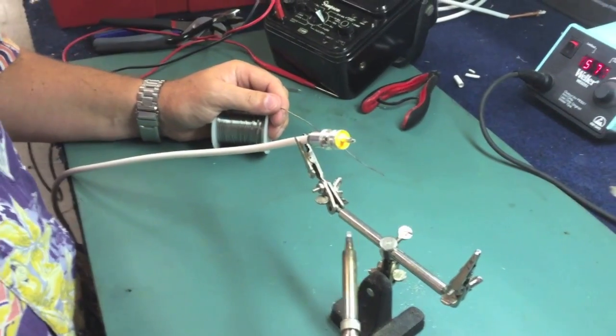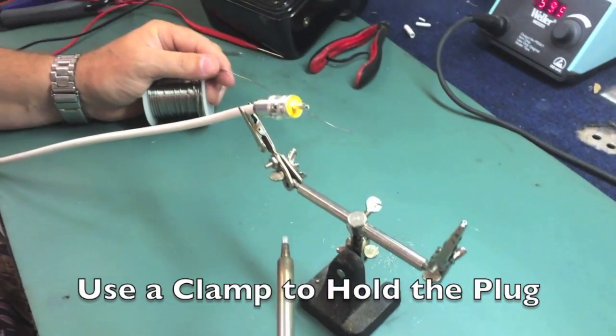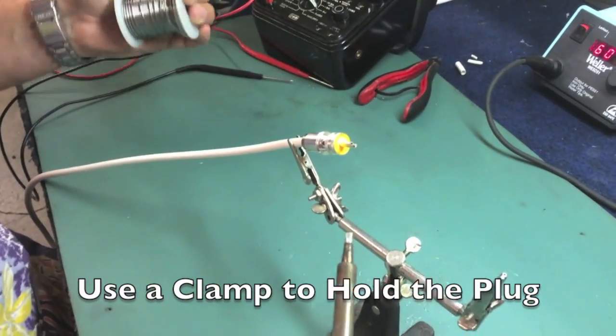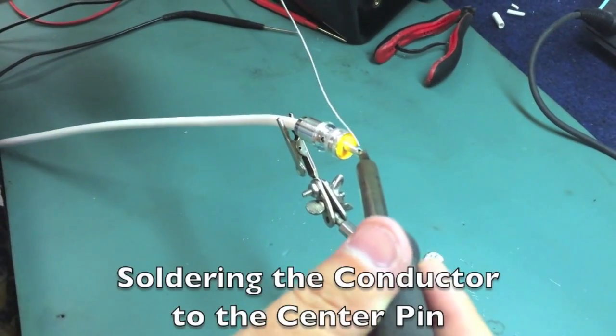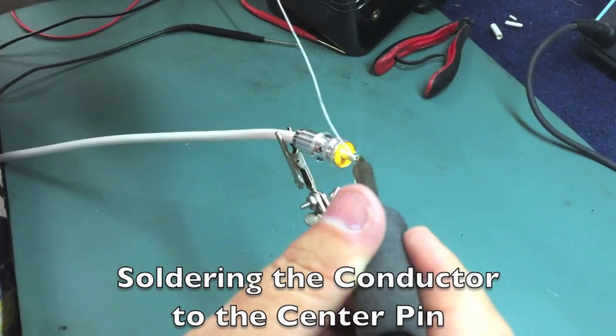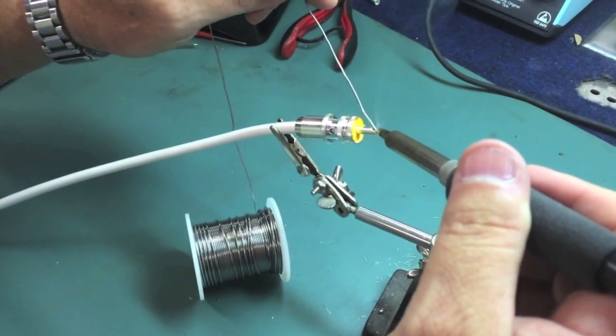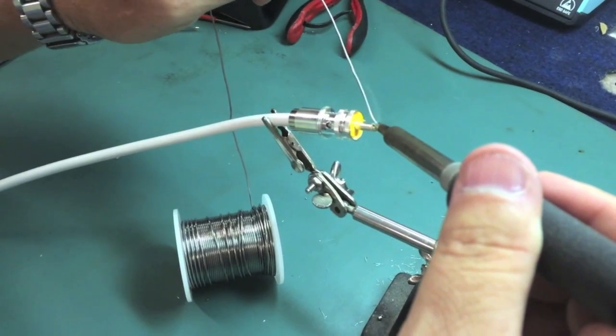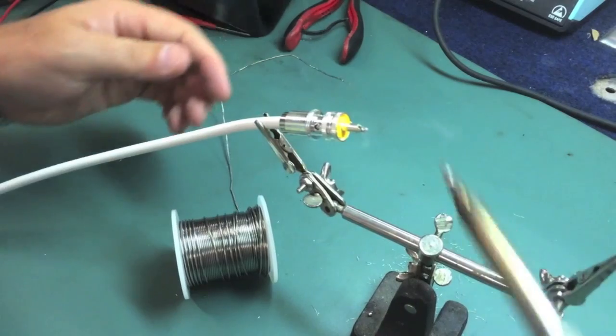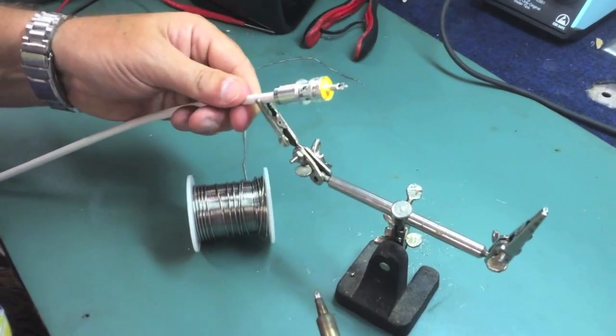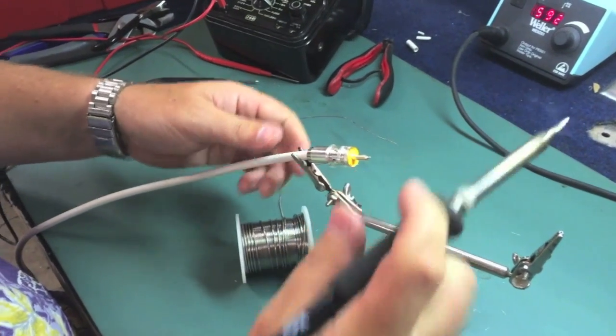It always helps too to have something like these Radio Shack arms here to keep your work in place while you're soldering, or it helps to have an extra pair of hands. So what we're going to do now is we're going to dribble some solder down on our center pin here. Like so. There we go. Next it's time to...